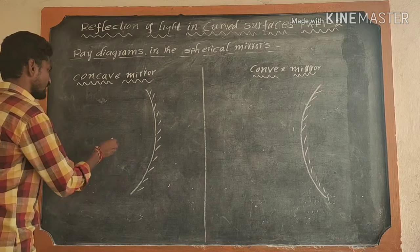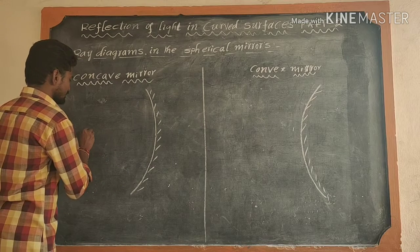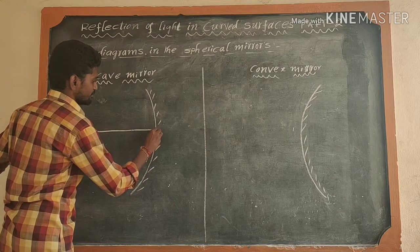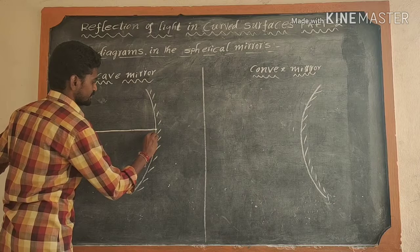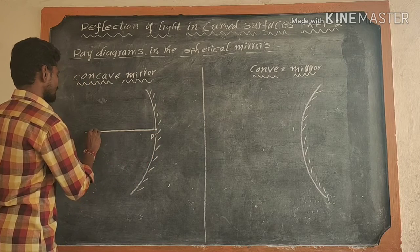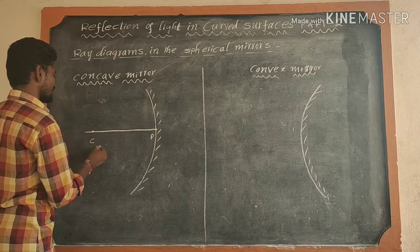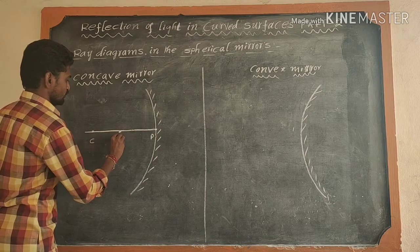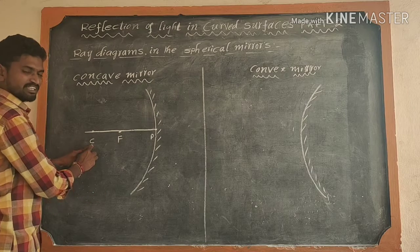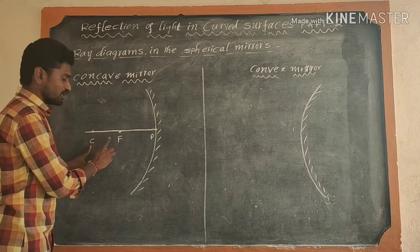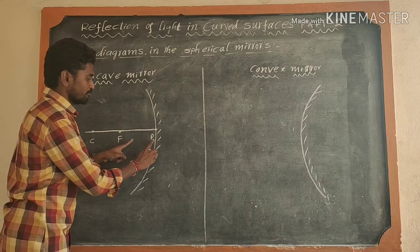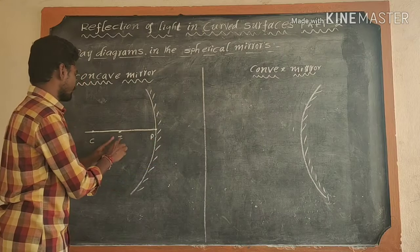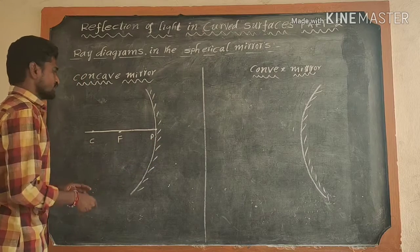First of all, we draw the principal axis. This is the principal axis. This is the pole P. Between the pole and center of curvature is the focus point F. This is the center of curvature C. F means focus point, P means pole. We know what P, F, and C are from the last class.